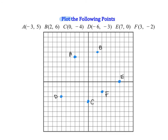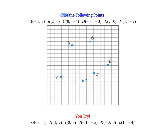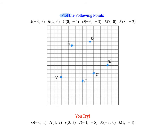Notice that coordinate B is in Quadrant I, coordinate A is in Quadrant II, coordinate D is in Quadrant III, and coordinate F is in Quadrant IV. Coordinate E is actually on the x-axis and C is on the y-axis. At this point, pause the video and try plotting these six points below — plot G, H, I, J, K, and L — and make sure you label them as you plot.